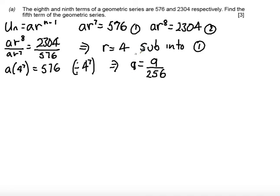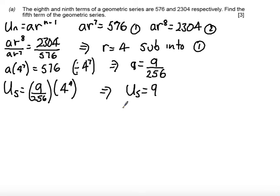Okay, so at this point I've got a, I've got r. I can just sub that in to find the 5th term. The 5th term, u5, will be given by a, which is 9 over 256, multiplied by 4 to the power of n minus 1. So 5 minus 1 is 4. And so I get 9 over 256 times 256, which gives us the 5th term is equal to 9.